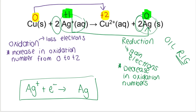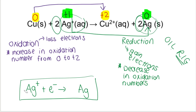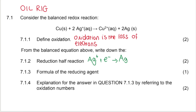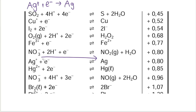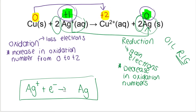If you had to reverse this — so if you first wrote Ag, then the arrow, then Ag⁺ + e⁻ — this is wrong because that represents oxidation. We know that Ag⁺, the silver ions, are being reduced because the oxidation number decreased. You actually get two marks for writing this correctly. Please take note that your arrow always points in one direction — to the right. It's never a double arrow. I know it's written as a double arrow on the table, but when you write down a half reaction, it's always with a single arrow.